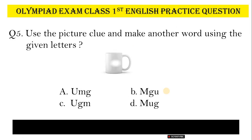Question No. 5. Use the picture clue and make another word using the given letters. Options: A, UMG; B, MGU; C, UGM; D, MUG. Correct answer is Option D, Mug.